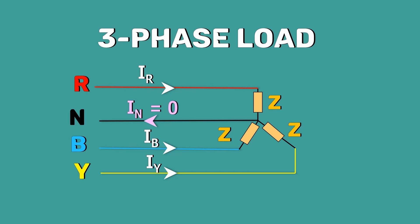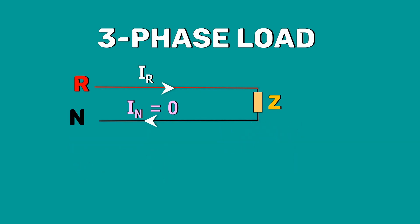In the balanced system, analysis can be done by considering one phase only. The knowledge of voltage and current in one phase is sufficient to determine the voltage and currents in the other two phases.